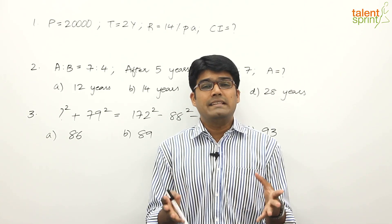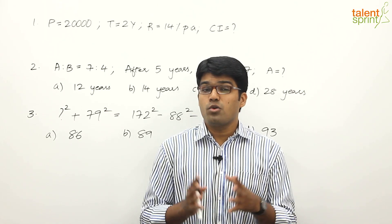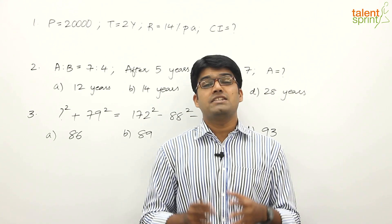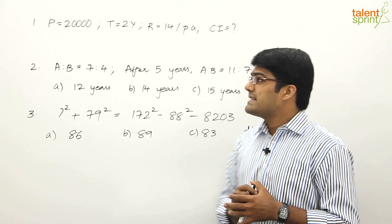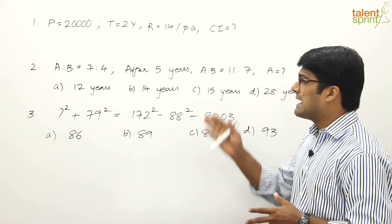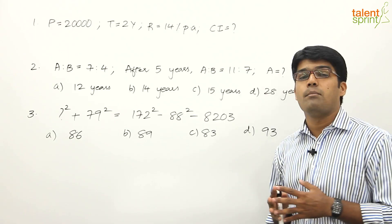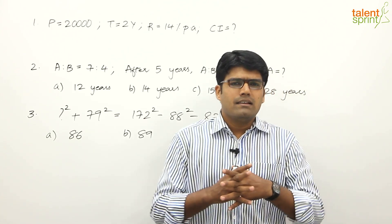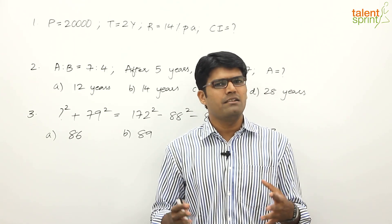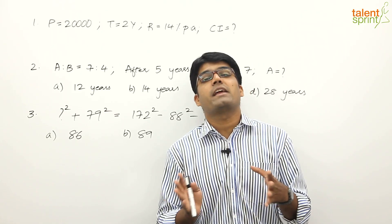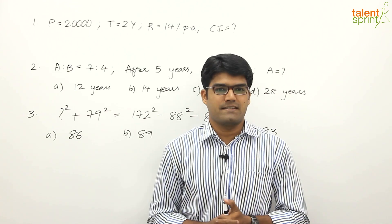In this video, I'm going to show you a few methods of answering questions in smart ways. Let's look at the four ways of solving aptitude questions, explained with examples. The first question: the principal amount is 20,000, the time period is two years, and the rate of interest is 14% per annum — find the compound interest. The first method is the traditional, conventional step-by-step procedure, but it wastes a lot of time.